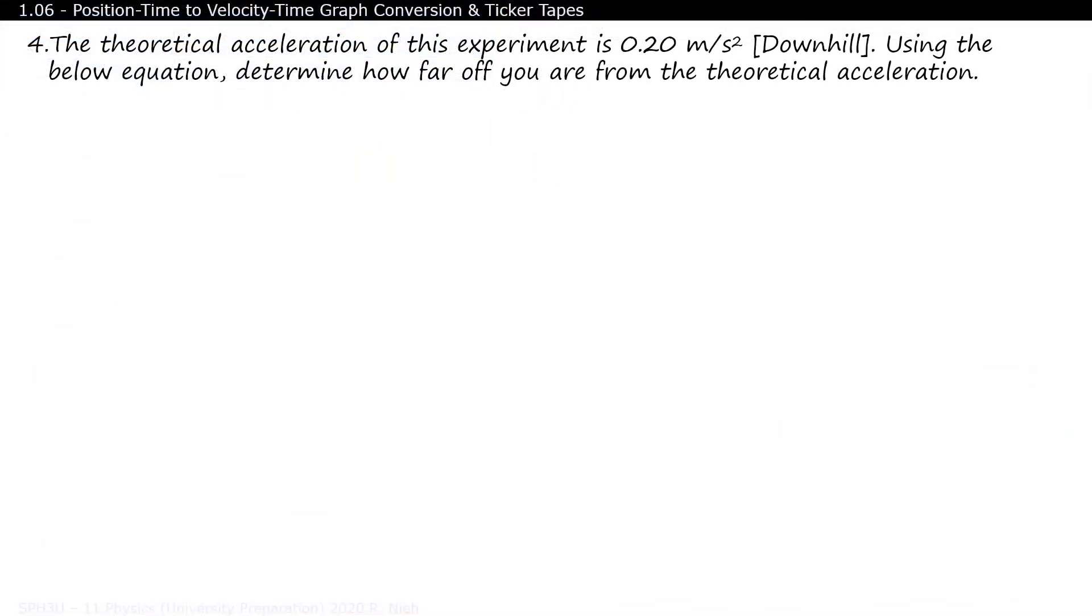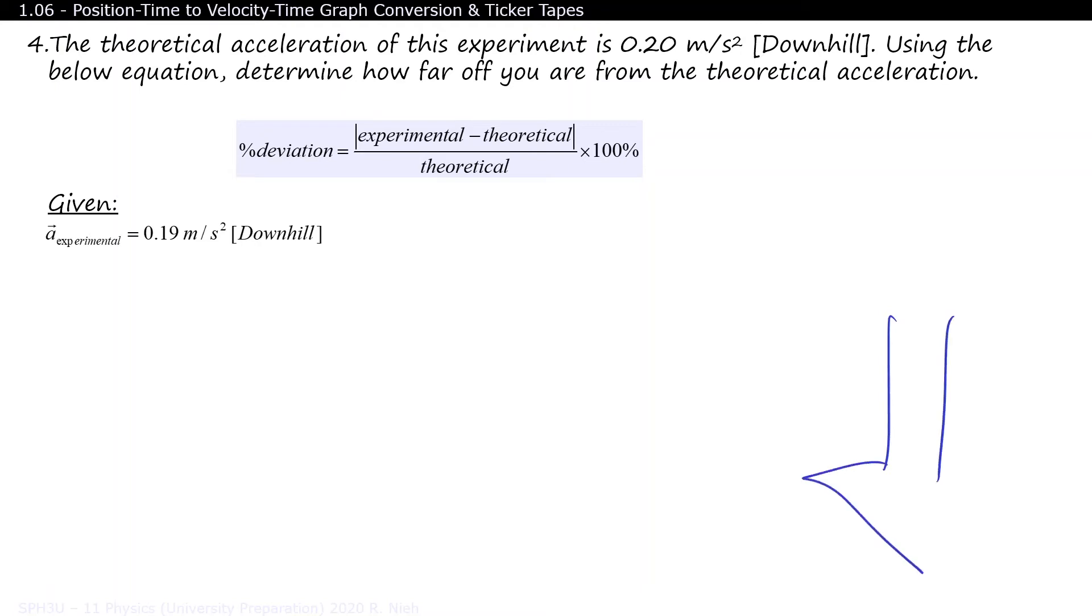The formula for determining percentage deviation is as follows. For my efforts of determining acceleration, I had a value of 0.19 meters per second squared. What was yours? Leave your answers in the comment section below.